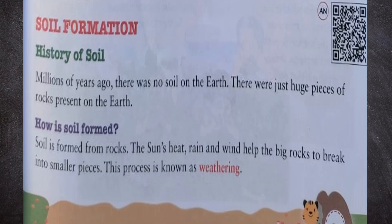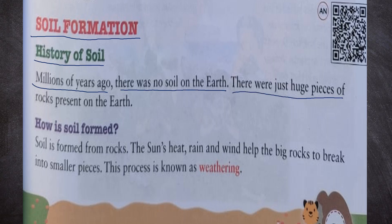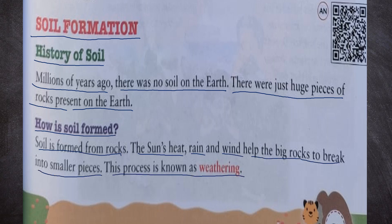Now, soil formation — the history of soil. Millions of years ago there was no soil on the earth; there were just huge pieces of rocks. Soil is formed from rocks. The sun's heat, rain, and wind help the big rocks to break into smaller pieces. This process is known as weathering.